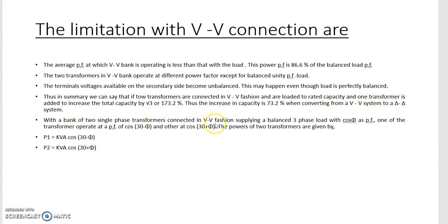With a bank of two single phase transformers connected in V-V fashion, supplying a balanced three phase load with cos phi as power factor, one transformer operates at cos 30 minus phi and the other at cos 30 plus phi. So, the power factor for the two transformers becomes KVA cos 30 minus phi and KVA cos 30 plus phi.